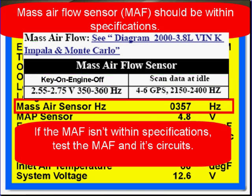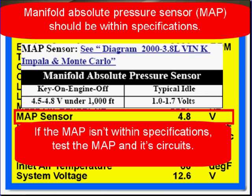Mass airflow should be within specifications. If it isn't, test the MAF and its circuits. MAP should also be within specifications. If it isn't, you're going to have to test the MAP and its circuits.